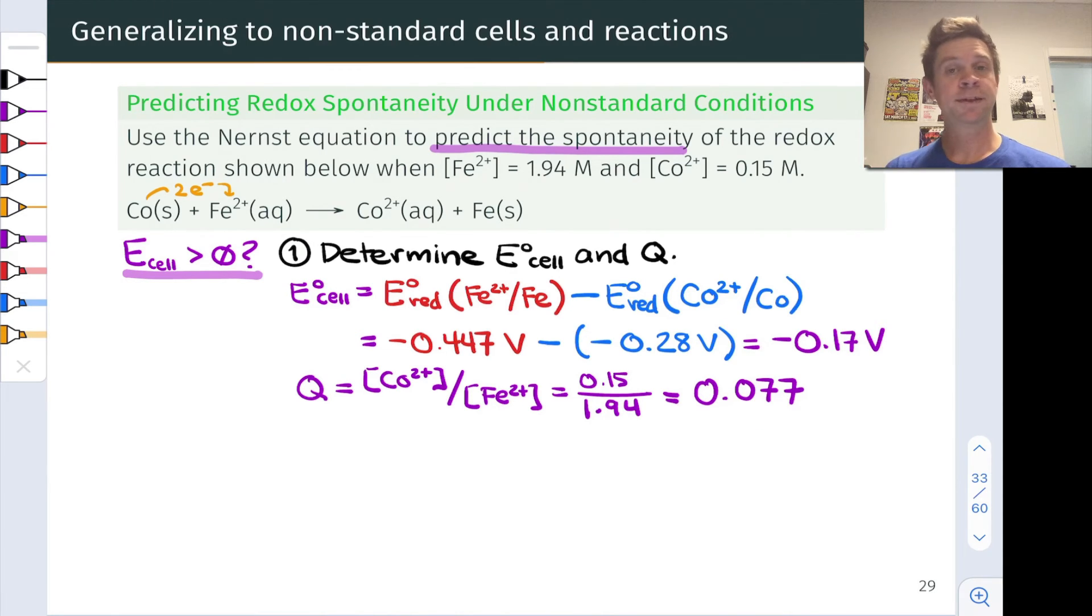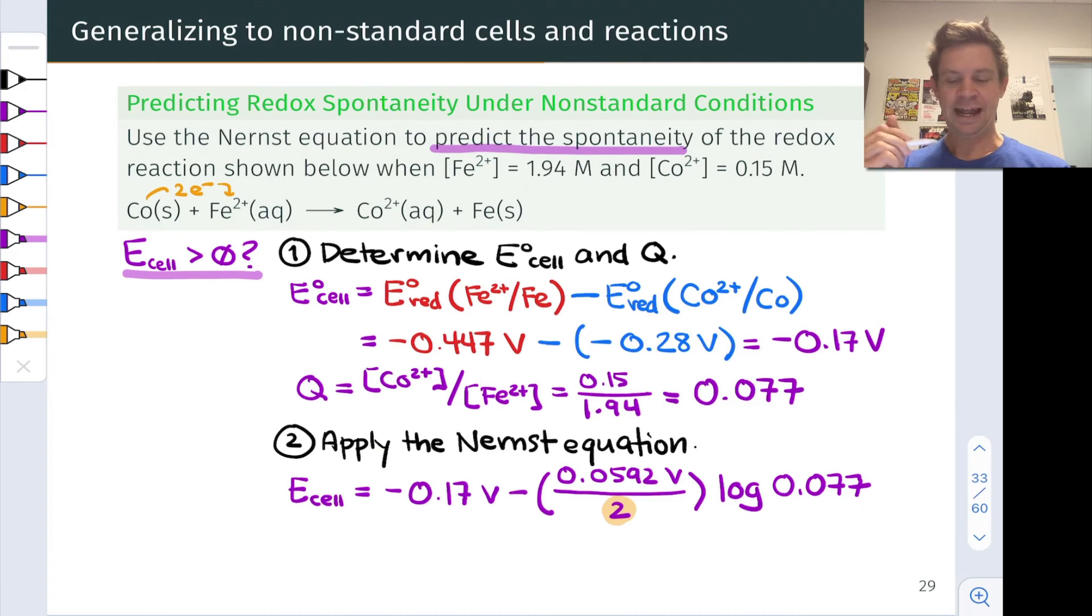At this point now, we've got everything we need to plug into the Nernst equation. We'll assume 298 Kelvin. The problem really should have specified that, but we can assume 298 Kelvin and use that shortcut version of the Nernst equation where we take the standard cell potential and subtract 0.0592 volts divided by n times the base 10 logarithm of 0.077. Before I show that number, I just want to highlight this 2 in the denominator. This is the value of n, the number of moles of electrons transferred in a mole of reaction events for the redox reaction as written. This is why we needed to determine, back at the beginning of the problem, that 2 electrons were transferred in this redox reaction.